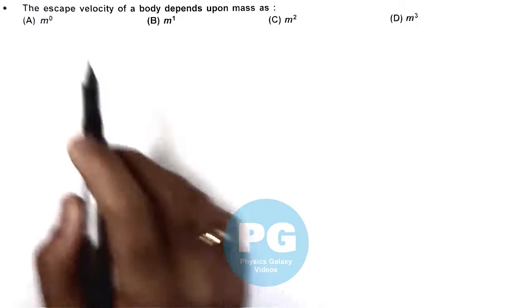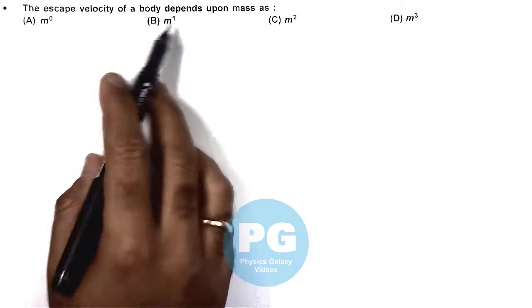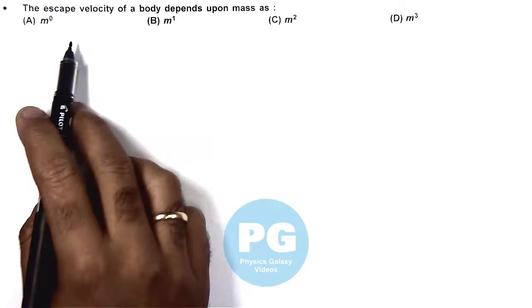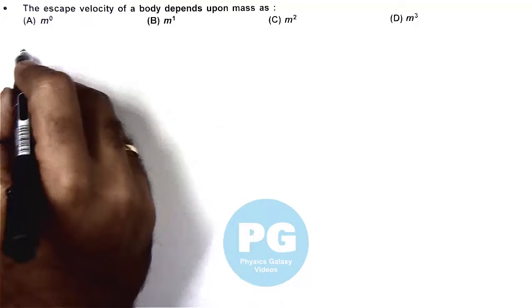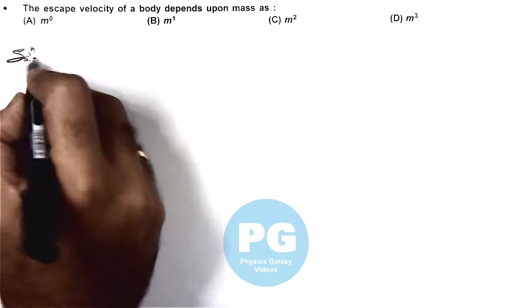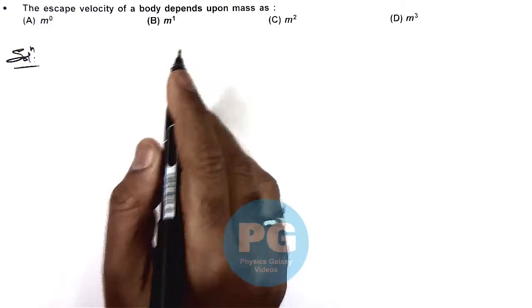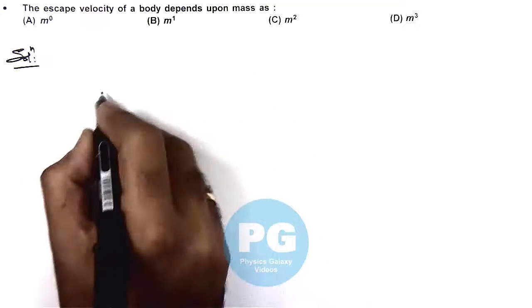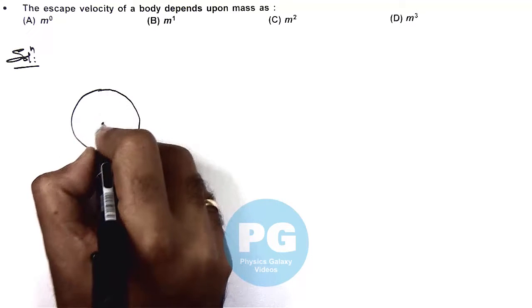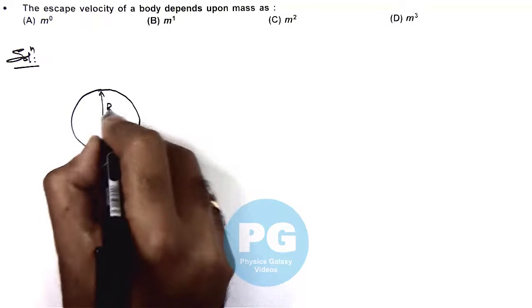In this question, it is asking how the escape velocity of a body depends upon mass. So here we know that escape velocity provides the kinetic energy so the total energy of the body becomes zero. We're talking about Earth's surface.